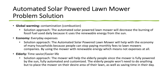Problem solution: With the mower we intend to solve the issues previously mentioned. For global warming, the mower will decrease the burning of fossil fuels by using renewable energy from the sun. For everyday expenses, the mower will help household economies since people can stop paying monthly fees to mowing companies. For the elderly, the mower is fully powered by the sun, fully automated, and customizable — elderly people only need to place it in the desired area of their lawn, saving time in their day.